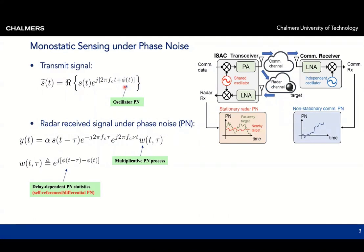From now on we will only focus on the radar received signal and ignore the communication receiver. The complex baseband signal is denoted Y of t and is subject to a delay tau, leading to phase rotations and a Doppler shift. There is also multiplicative phase noise, denoted W of t and tau, and we see that this phase noise depends both on the time t and the distance reflected by tau.